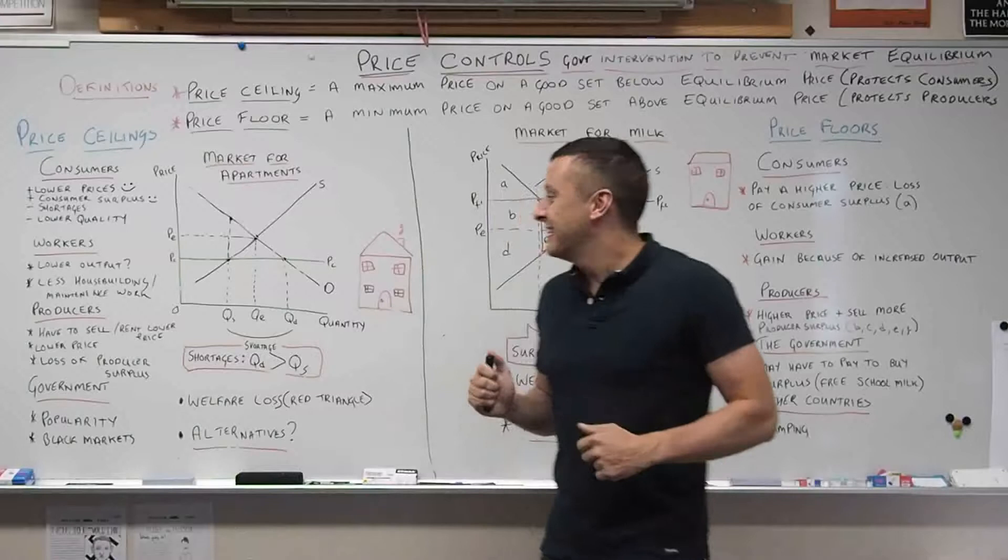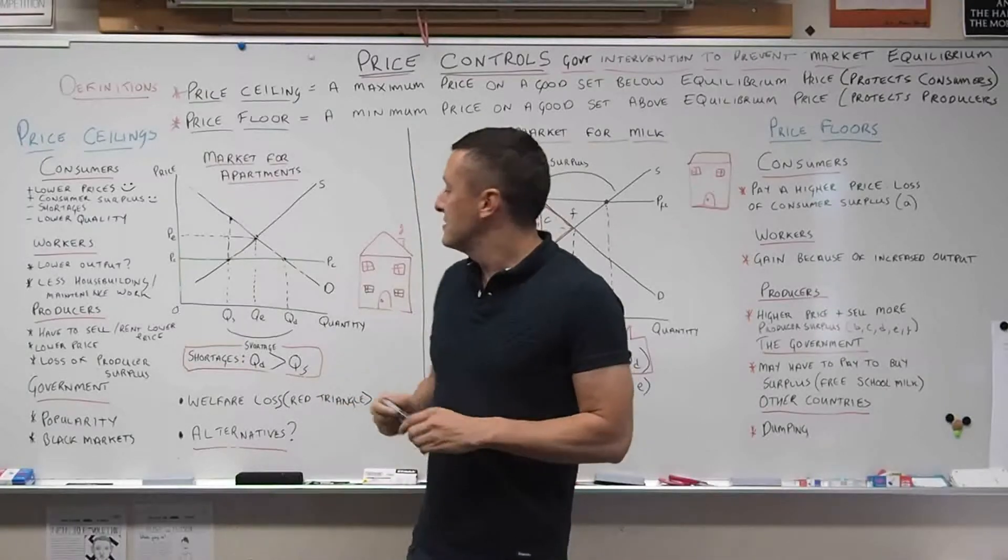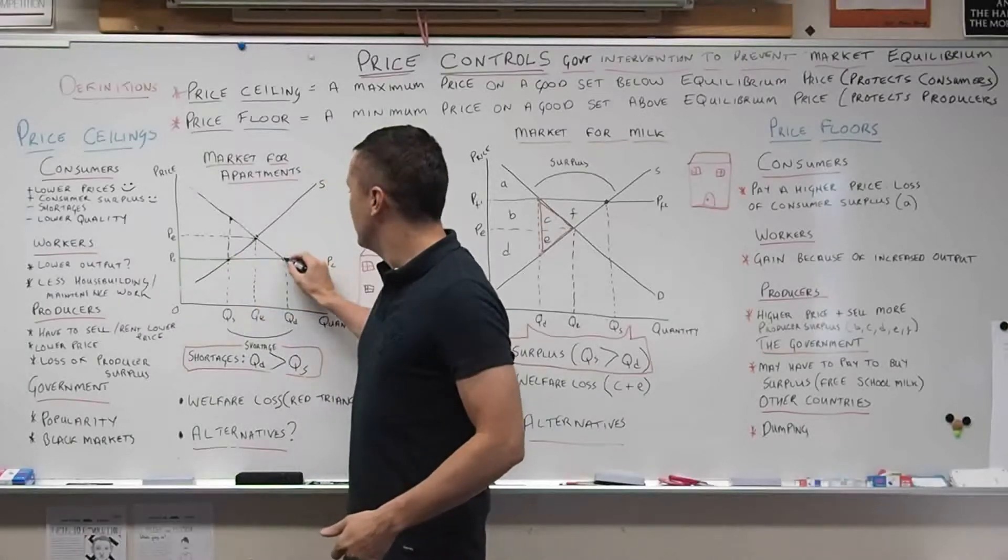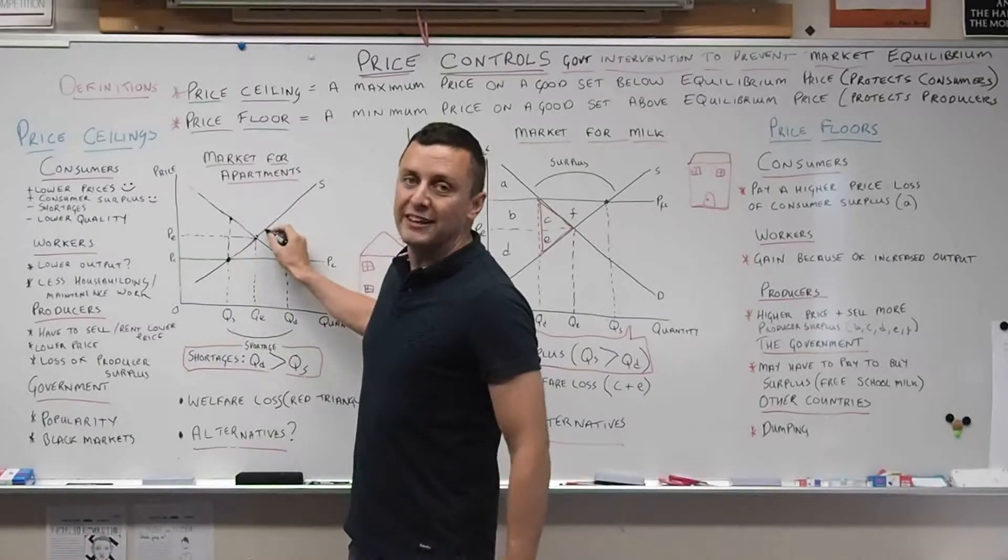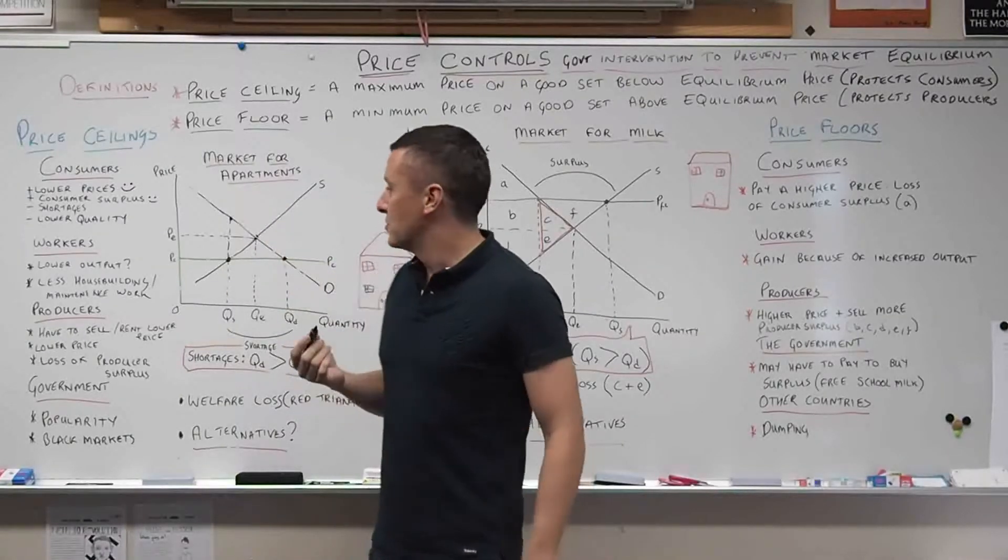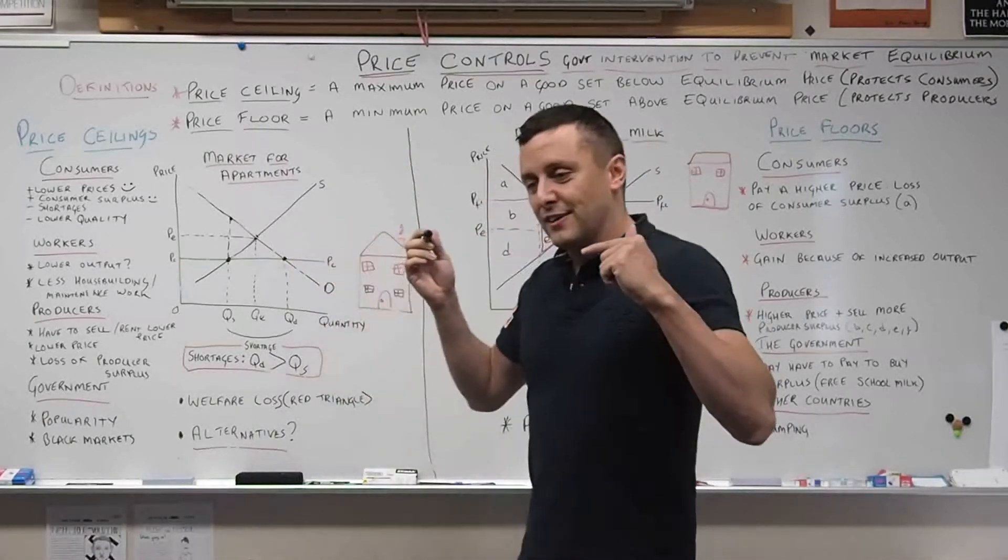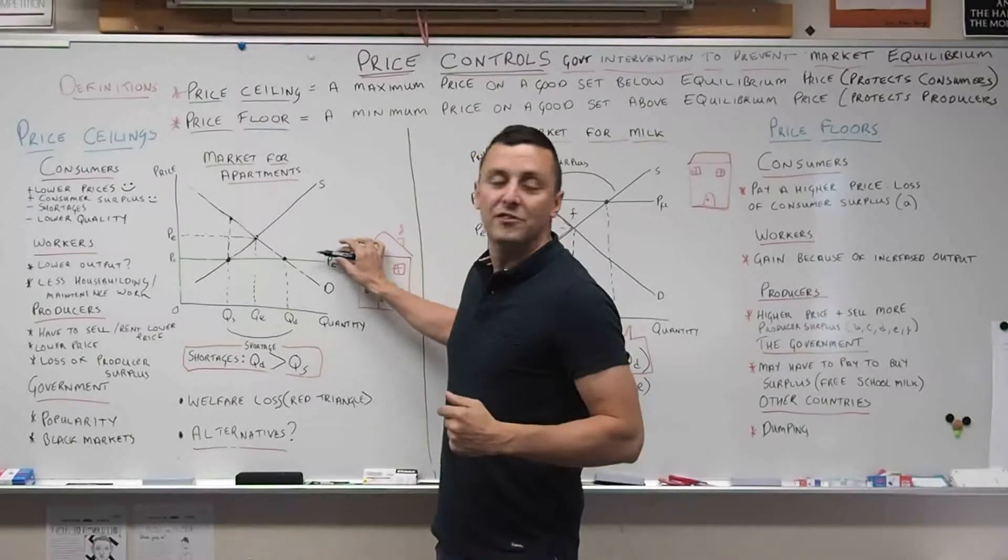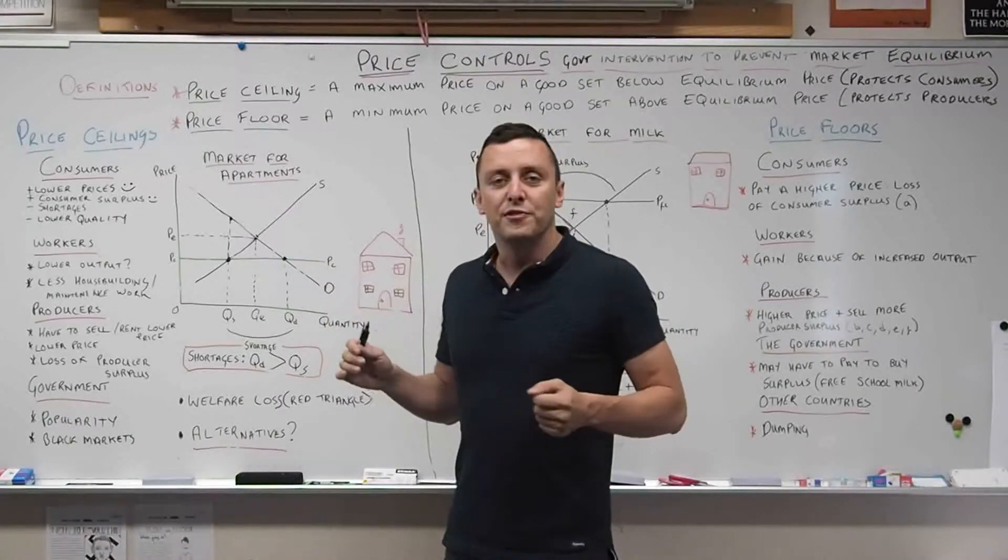So that means in theory, consumers should be better off and happier with the lower prices. However, that's not the full story. Putting a price ceiling could lead to shortages. This happens because even though quantity demanded is here, quantity supplied is here. That means there's much less producers willing to rent or build new apartments.